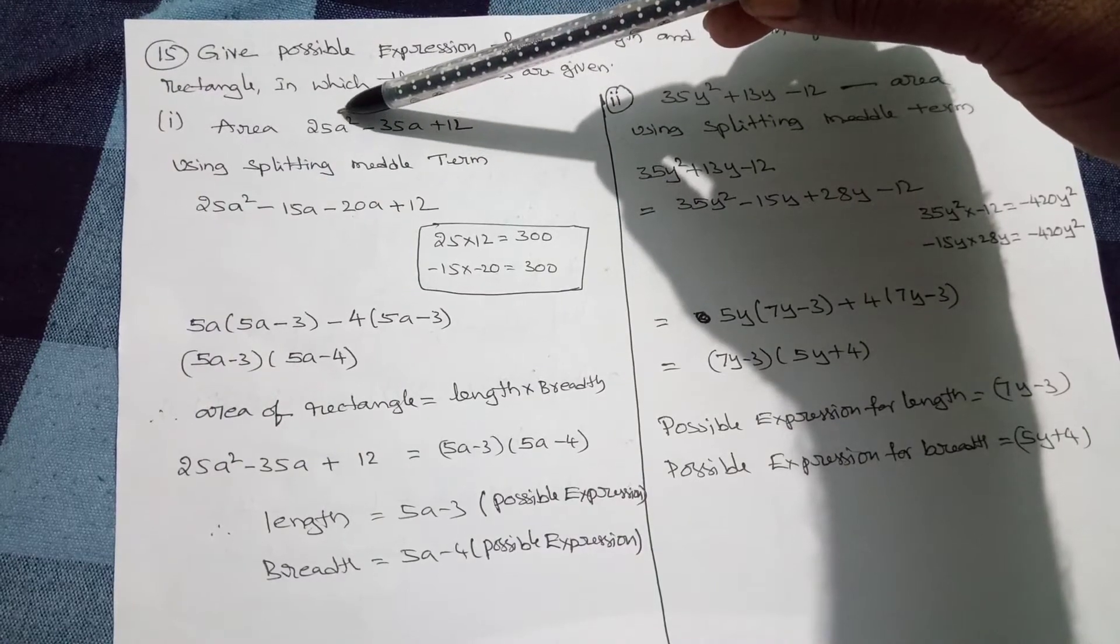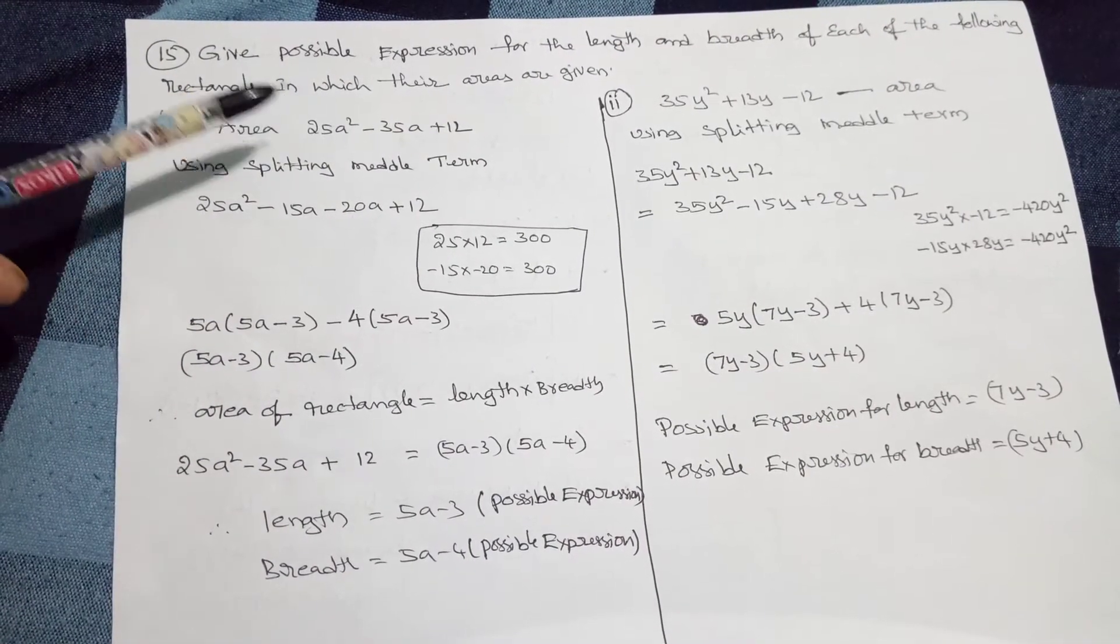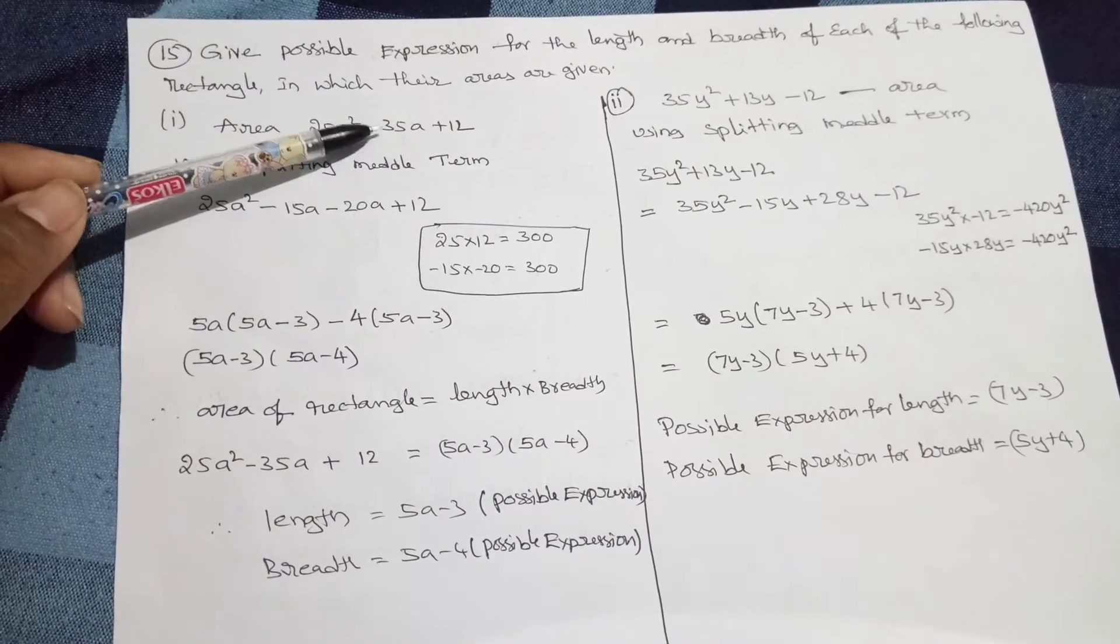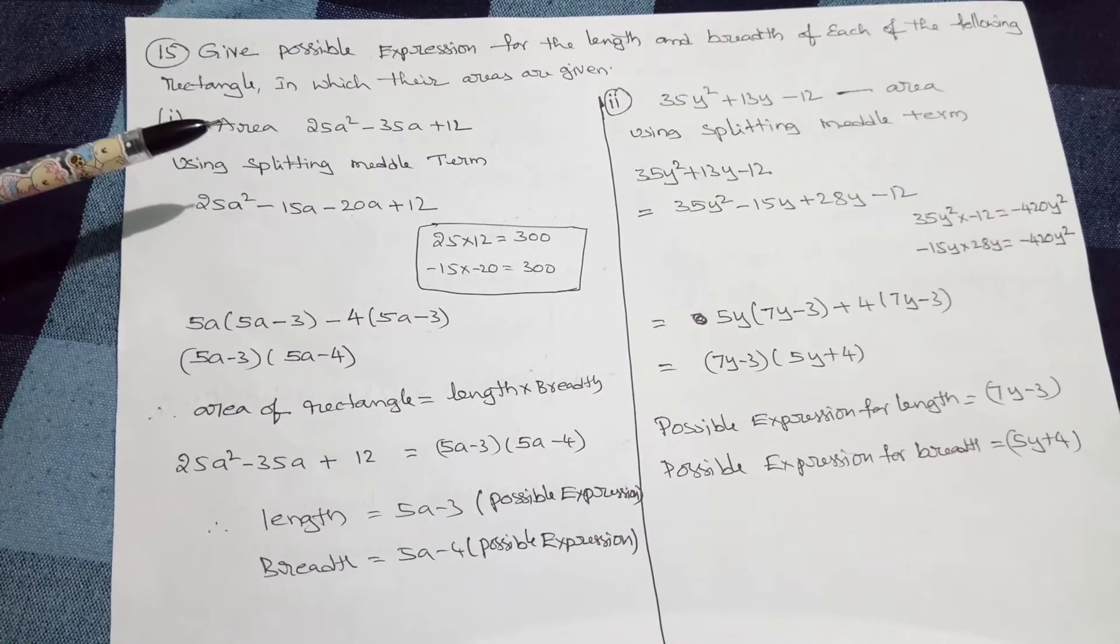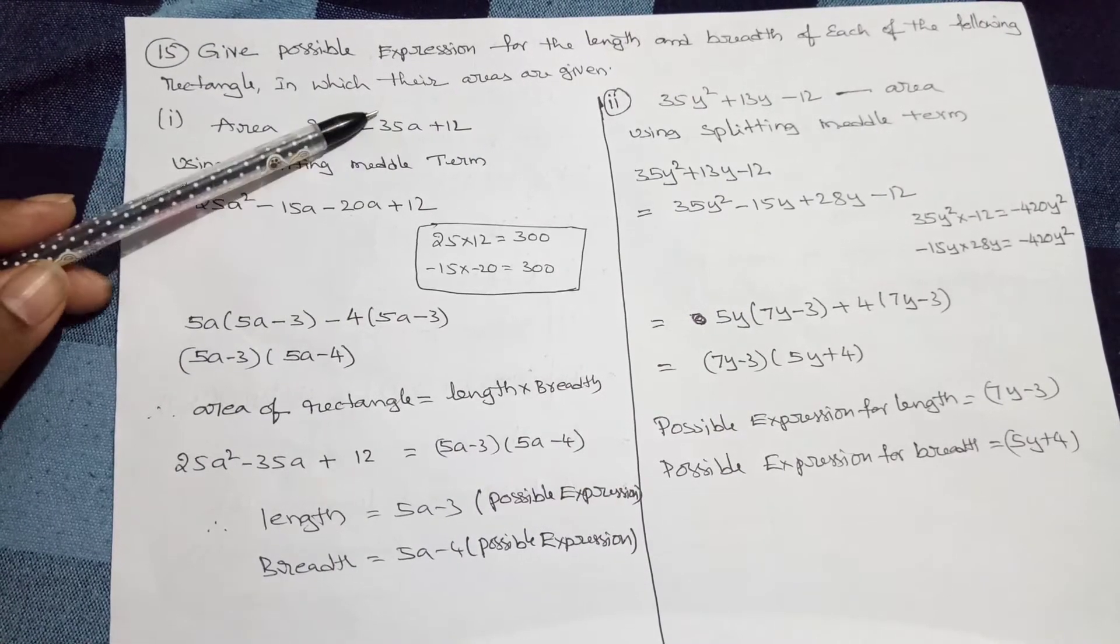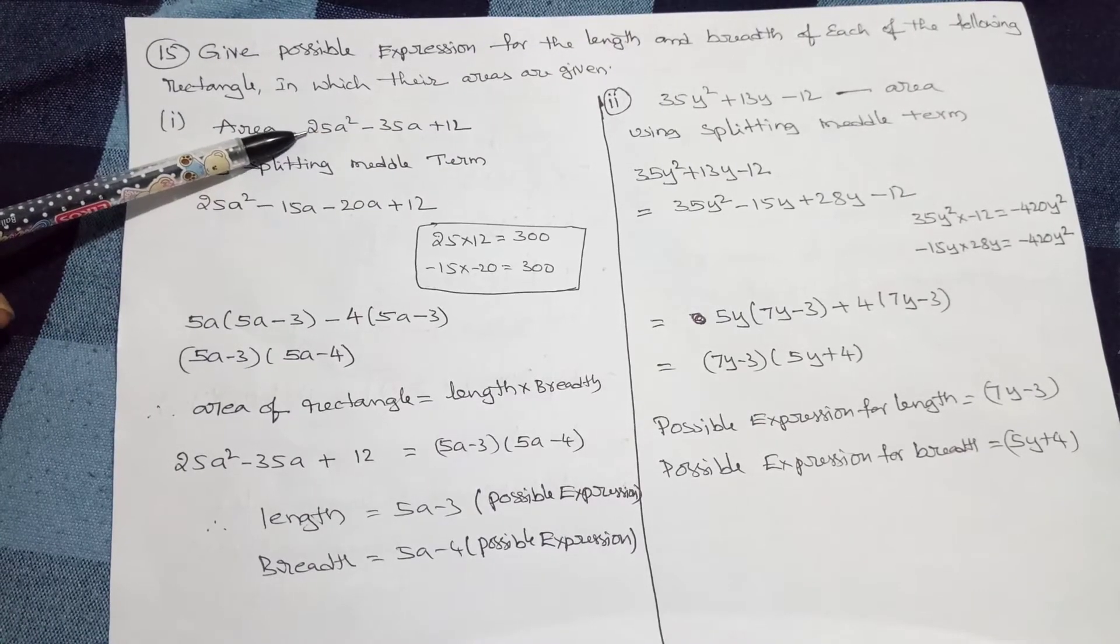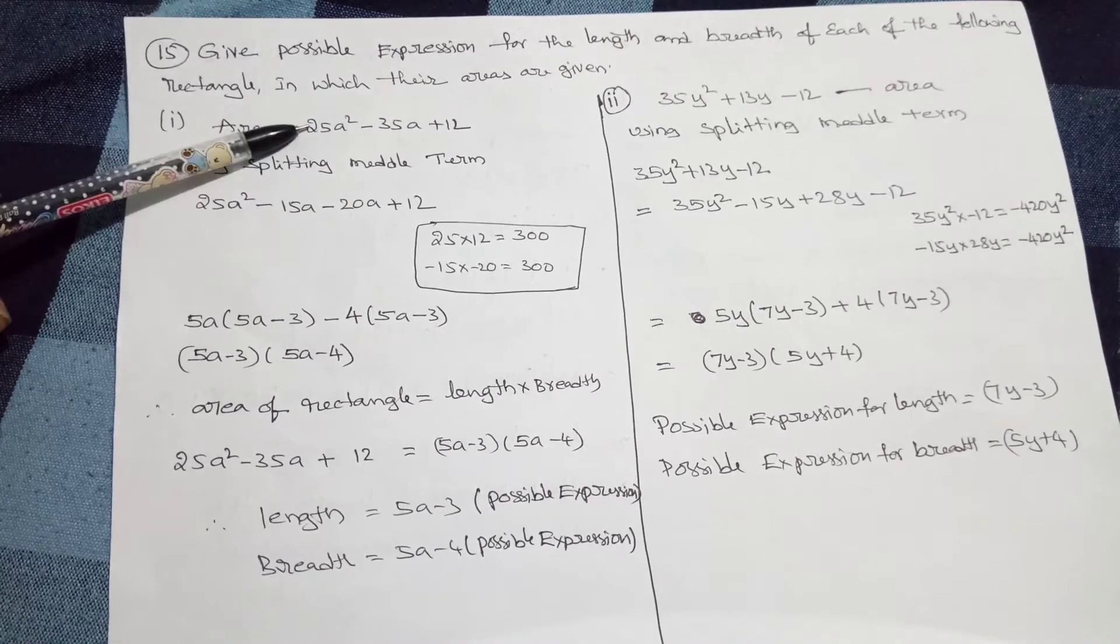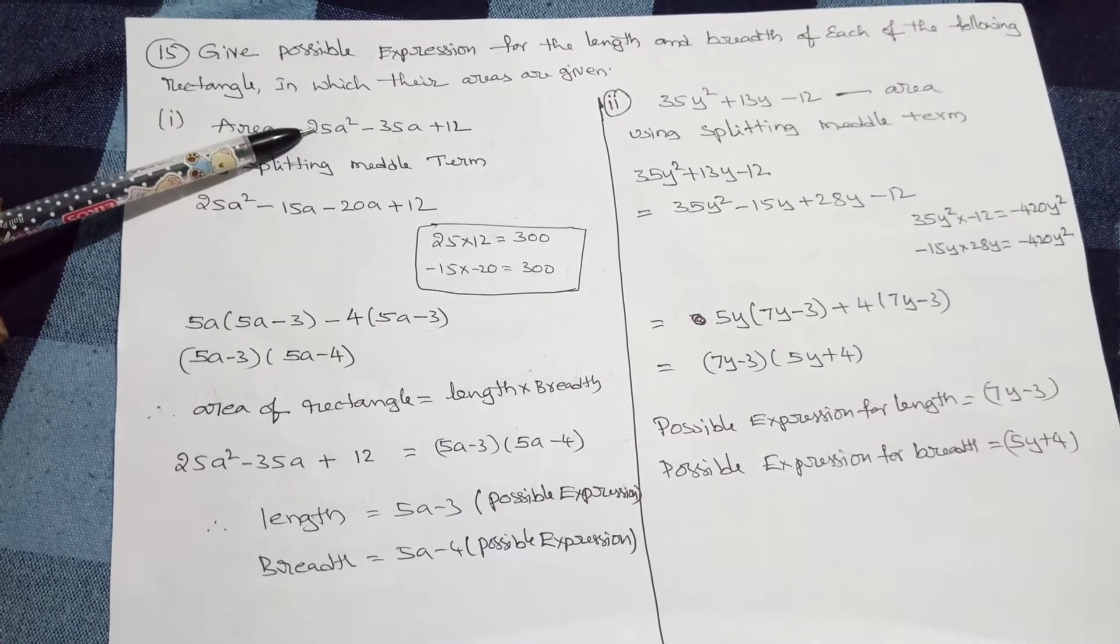So here area is given 25a² - 35a + 12. Therefore, this is 25a² - 35a + 12. This is a quadratic equation. Now we can consider this as the area of a rectangle.